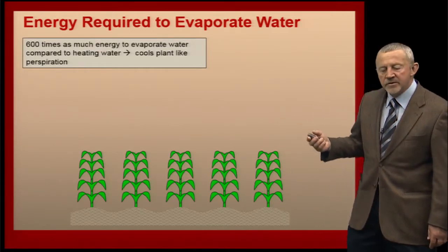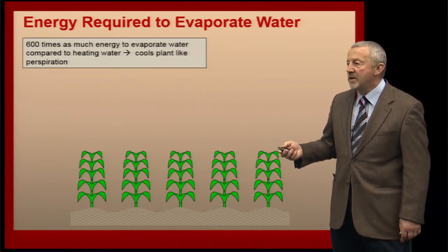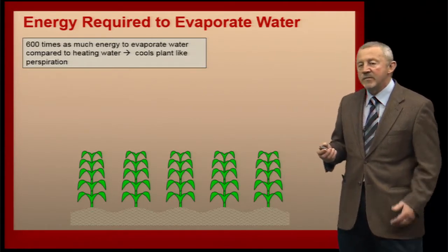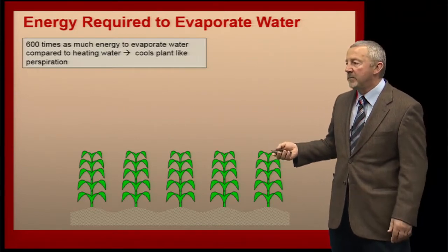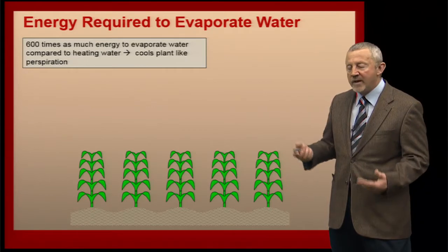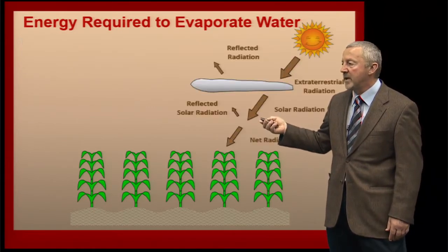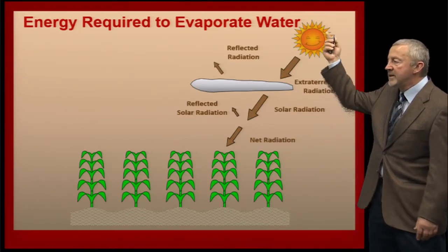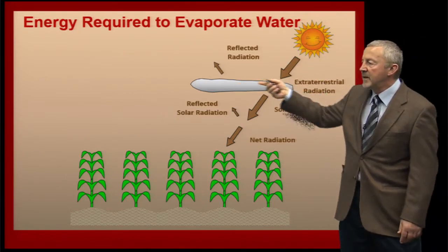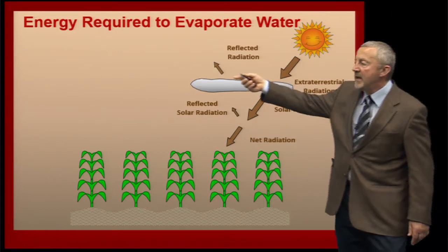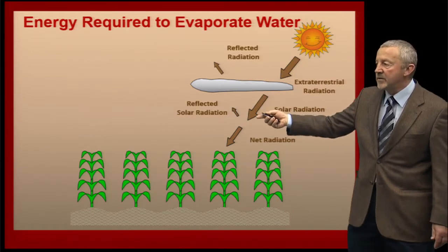If we look at the terrestrial energy coming into our environment, there's a lot of energy required to evaporate water. In fact, it takes about 600 times as much energy to evaporate water compared to just heating water. When water evaporates from the plant leaf surface, it cools the plant just like if the plant were perspiring. We've got a lot of energy coming through from the sun, and if we have cloud cover and other upper atmosphere conditions, some of that energy is actually reflected back out into the atmosphere, while some of it penetrates through and makes its way down towards the Earth's surface.